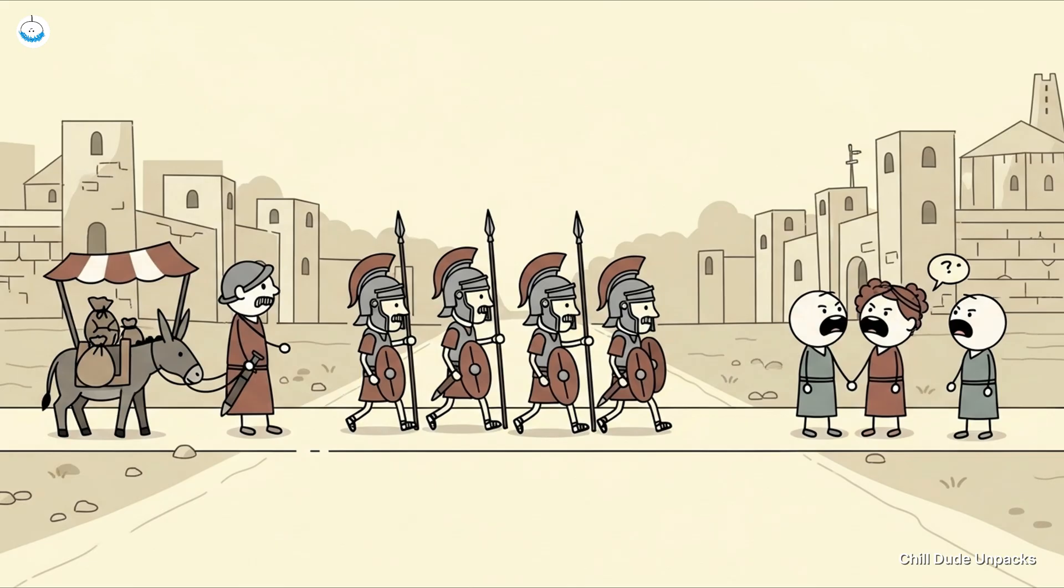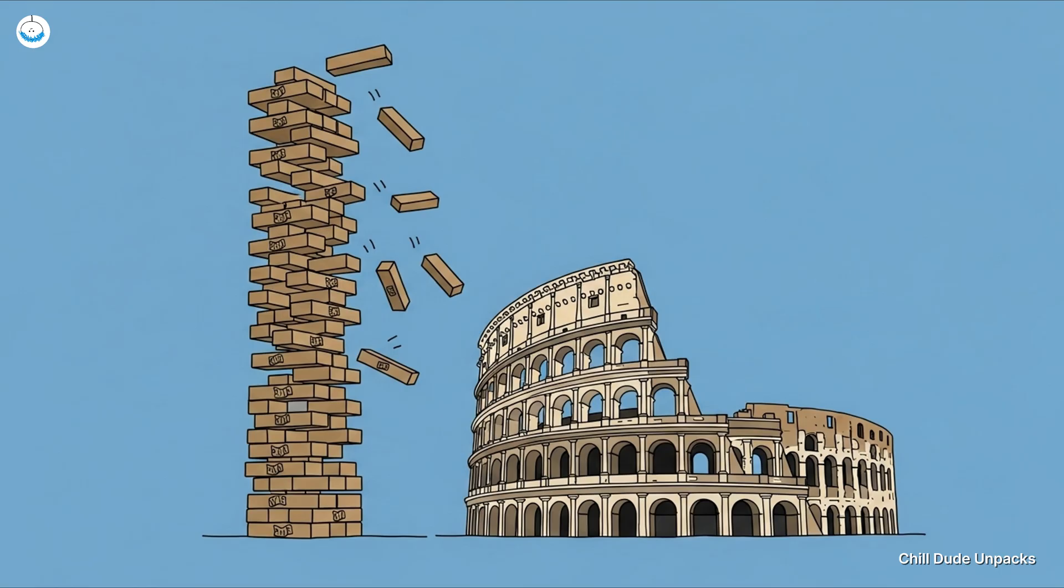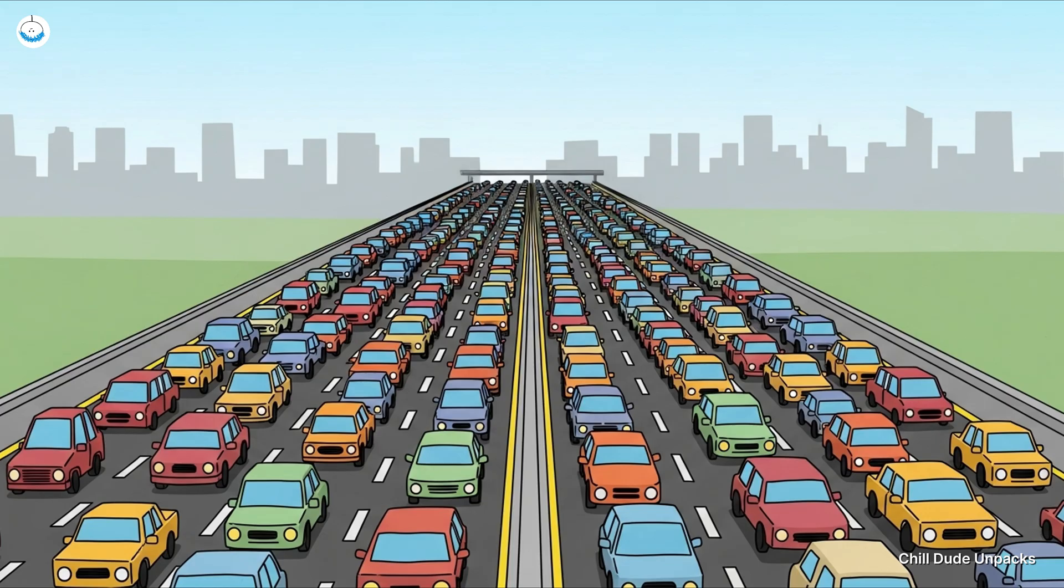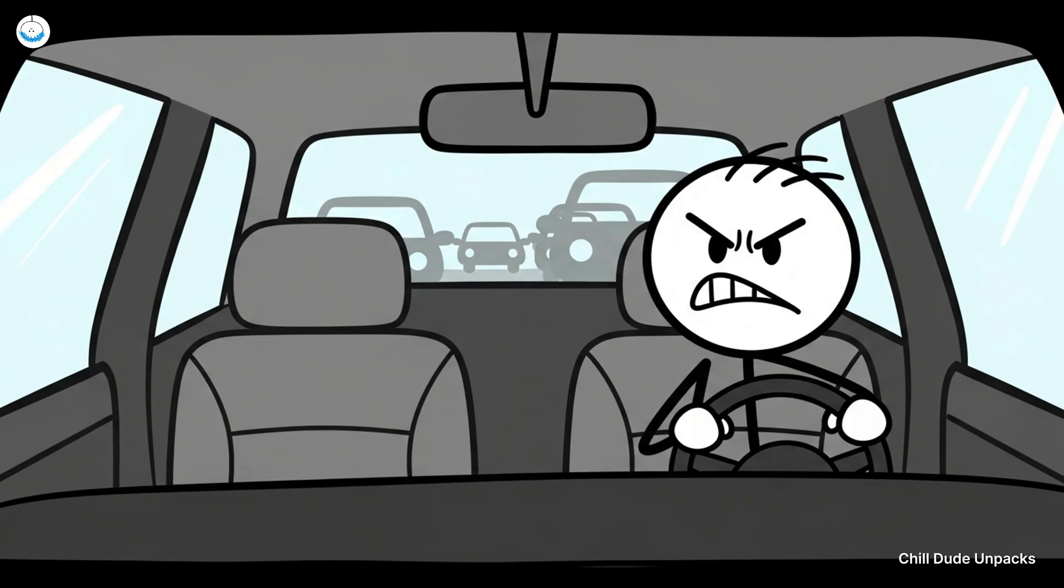And they worked: troops, merchants, and gossip traveled at record speed for the time. Without them, the Roman Empire might have collapsed faster than a bad Jenga tower. Modern road building still borrows their layering techniques. So every time you're stuck in traffic, you can thank the Romans for inventing the system. And also curse them because, yeah, they started this whole roads everywhere thing.